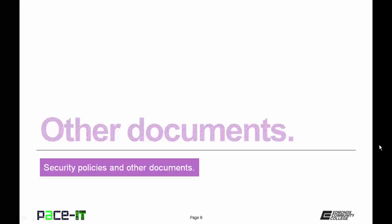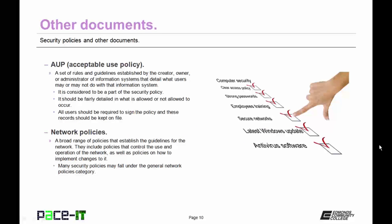Now let's conclude with a brief discussion on some other documents. First up is the AUP, or Acceptable Use Policy. These are a set of rules and guidelines established by the creator, owner, or administrator of information systems that detail what users may or may not do with that information system. It is considered to be part of the security policy. The AUP should be fairly detailed in what is allowed or not allowed to occur, and all users should be required to sign it — these records should be kept on file.